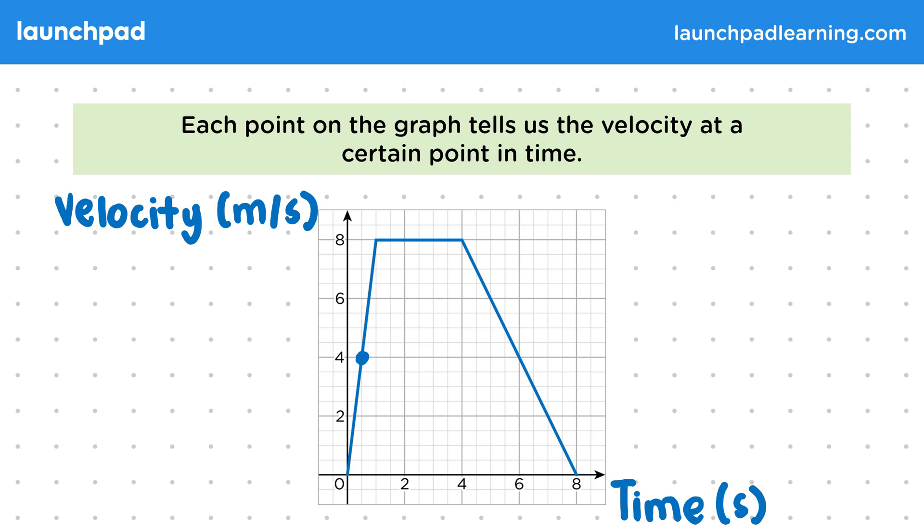So for this point here, we have a y value of 4 and an x value of 0.5. This tells us that the bird was travelling at 4 metres per second when the time was 0.5 seconds. Here when we say the time was 0.5, we mean 0.5 seconds after we started recording the bird's velocity.